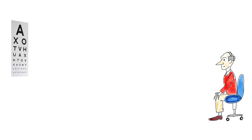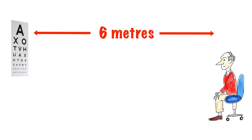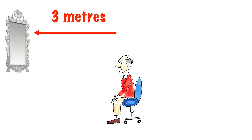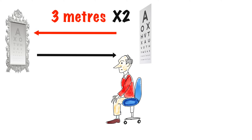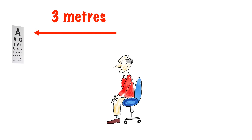The standard visual acuity test should be performed at six metres from the chart. However, few of us have an examining room that is six metres long, so often we cheat by sitting the patient three metres in front of a mirror with a backwards-facing Snellen chart behind them reflected in it, or use special smaller charts designed for use at closer range.